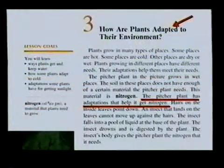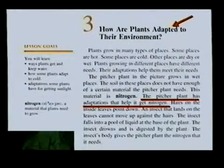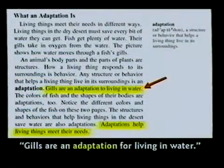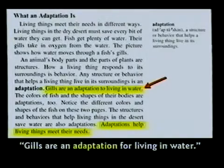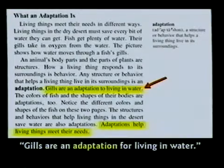Evolutionists have never come up with an answer to that argument. Now in textbooks they teach that things have 'adapted' to their environment. This 2000 textbook says the pitcher plant has adaptations to help it get nitrogen, and that gills are an adaptation to living in water. Why don't they say 'designed'? Because then a kid will ask 'who's the designer?' — and they don't want to have to answer that question.